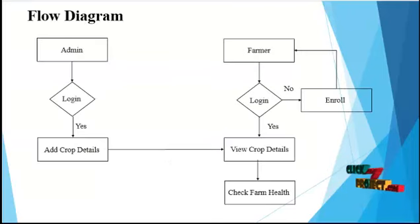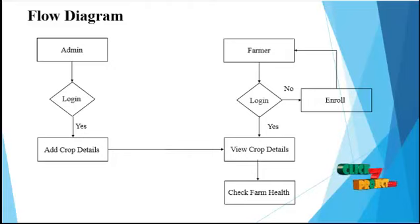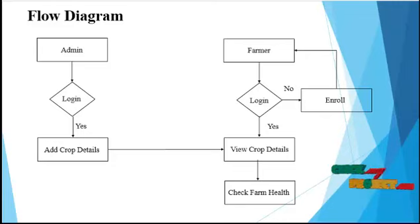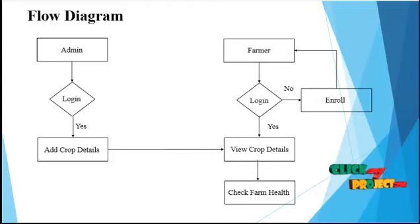Now comes the flow diagram of the process, which shows the process diagrammatically. There are two process controllers: admin and farmer. Admin has a separate login and farmer has a separate login. Once the admin is logged in, admin manages crop details, and the farmer must also log in separately to access the system.